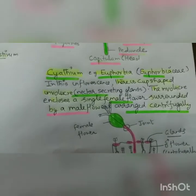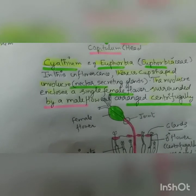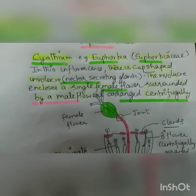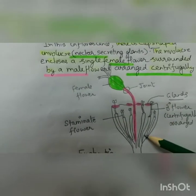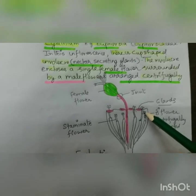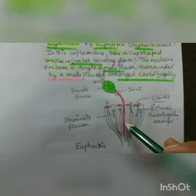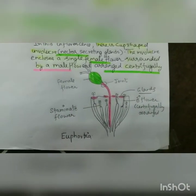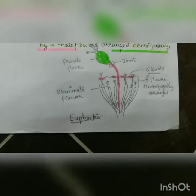The next special inflorescence is cyathium, from the Euphorbiaceae family, which I will be covering in the coming days. In this inflorescence, there is a cup-shaped involucre - bracts are fused to form a cup-shaped involucre with nectar-secreting glands. This involucre encloses a single female flower surrounded by male flowers, arranged centrifugally. The best example is Euphorbia.